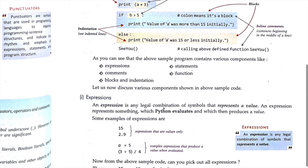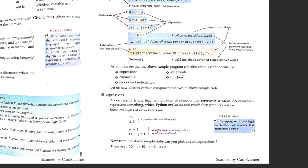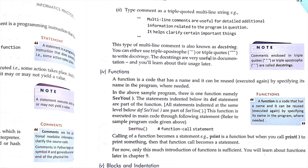An expression is any legal combination of symbols that represents a value. An expression represents something which Python evaluates and which then produces a value. Examples of expressions are: 15, 2.9 — a value alone is an expression. Also a + 5, (3 + 5) / 4 are complex expressions. These all are examples of expressions.